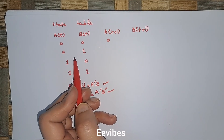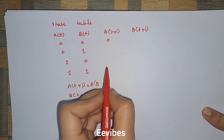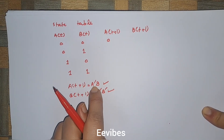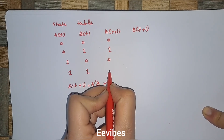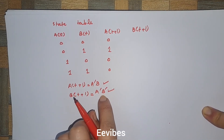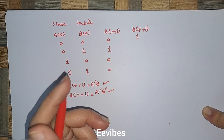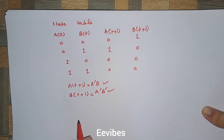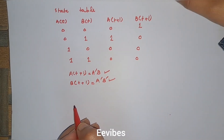Continuing to fill A(t+1): when A=0 and B=1, A'=1 and B=1, so A(t+1) = 1. The remaining entries are 0. For B(t+1) = A'B': it equals 1 only when both A=0 and B=0 (first combination), so B(t+1) = 1 for that row and 0 for the rest. We are now done with the state table. The next step is to draw the state diagram.